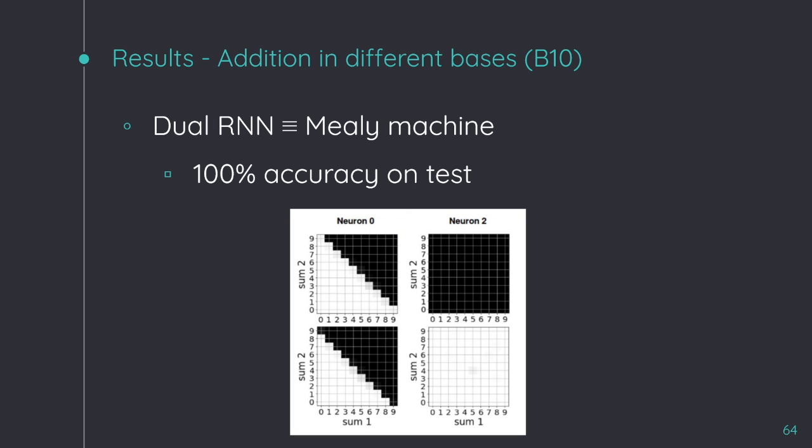Now, let's go with the dual network. I show you here the activation patterns of the two active neurons. It is important to say that whatever the base, there are always two active neurons, and the rest are turned off. This time, the recurrent layer behaves as an external memory, and it is just remembering the carry.